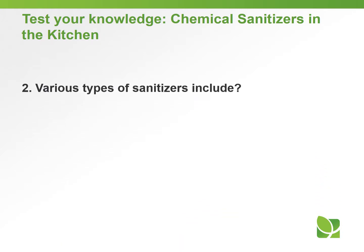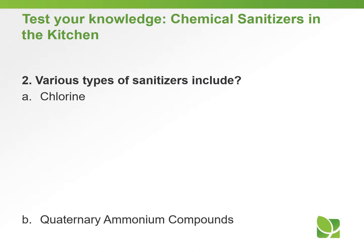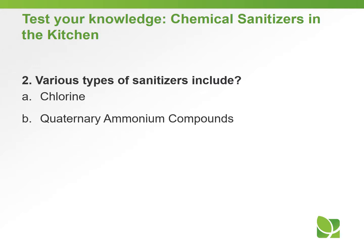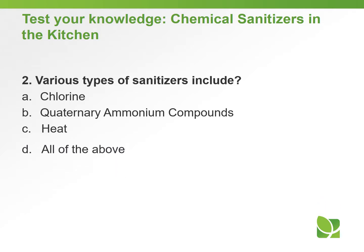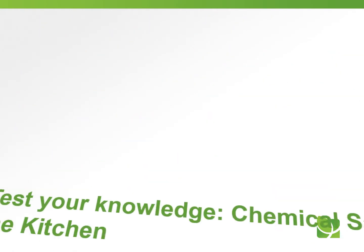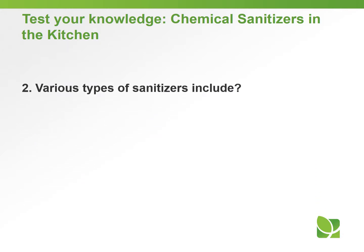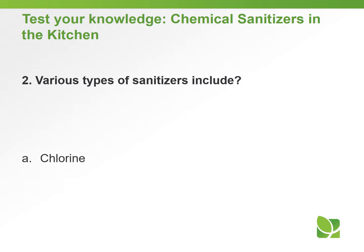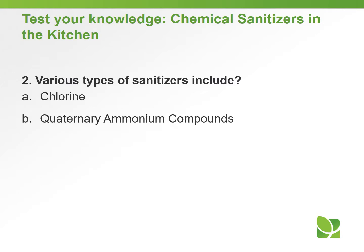Question number two: various types of sanitizers include A. Chlorine, B. Quaternary ammonium compounds, C. Heat, or D. All of the above. The answer to question number two: various types of sanitizers include D, all of the above.